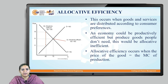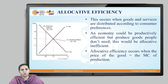Looking at another point Q2, the marginal cost of rupees 15 for the quantity of 40 is much higher than the marginal cost of rupees 6 for the same quantity of 40. In this case there is an under consumption of resources. So an economy could be productively efficient and produce goods which people need, but it need not necessarily be allocatively efficient.